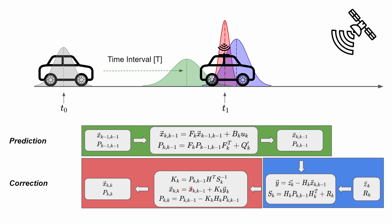The next step is to do the update for the state vector. The update equation has the predicted state from the prediction step as the first term, and then we add the amount of correction we expect. This correction depends on the Kalman gain — the weight calculated in the previous step — multiplied by the residual, which is the error between the actual measurement and the predicted measurement. Based on this difference and their respective covariances, we determine how much correction to add to the predicted state, giving us the new estimated state.